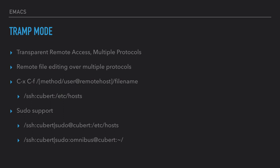The way it works is if you want to open a file on a remote system, you do C-x C-f and then specify the method, user at remote host, and the file you want to open. For example: /ssh:qbert:/etc/hosts to look at the hosts file on a machine in my network called Qbert. It also supports sudo, so if you need to run as a different user or root, you can pass that in. Frequently I use sudo to edit files as root or connect to machines as other users if the user is listed in sudoers.